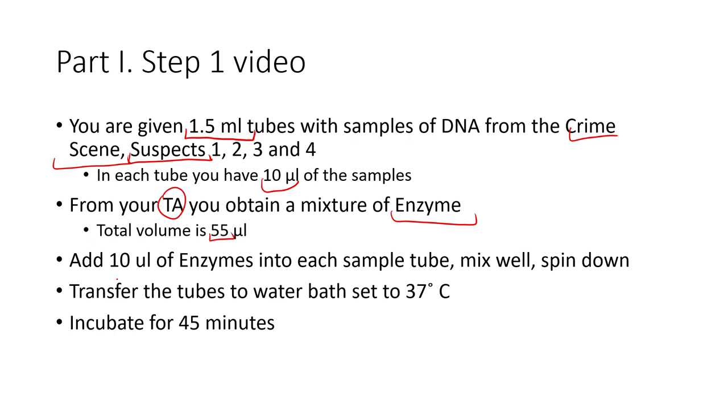What you do is add 10 microliters of the enzymes to the sample tubes. In this case here you have 10 microliters, then you add another 10, and you should be left with 20 microliters per tube.